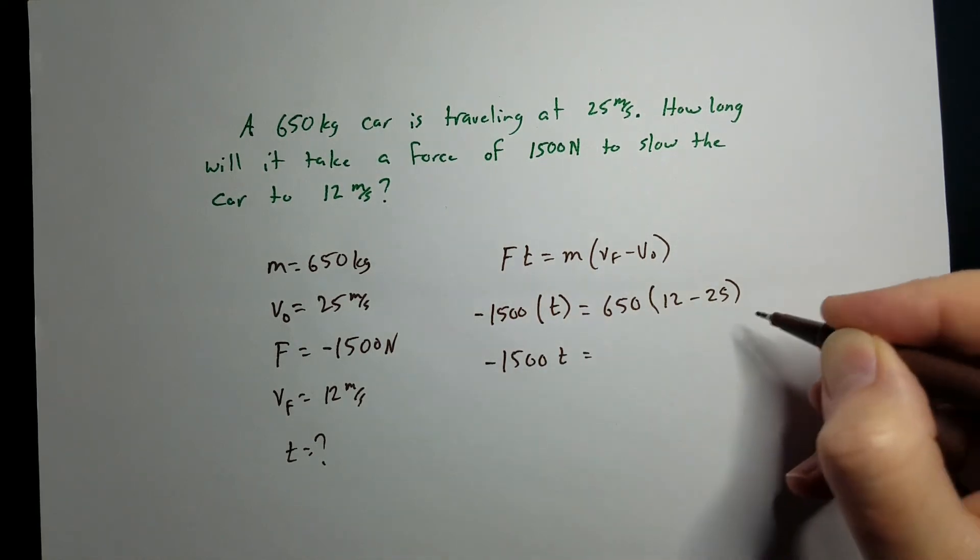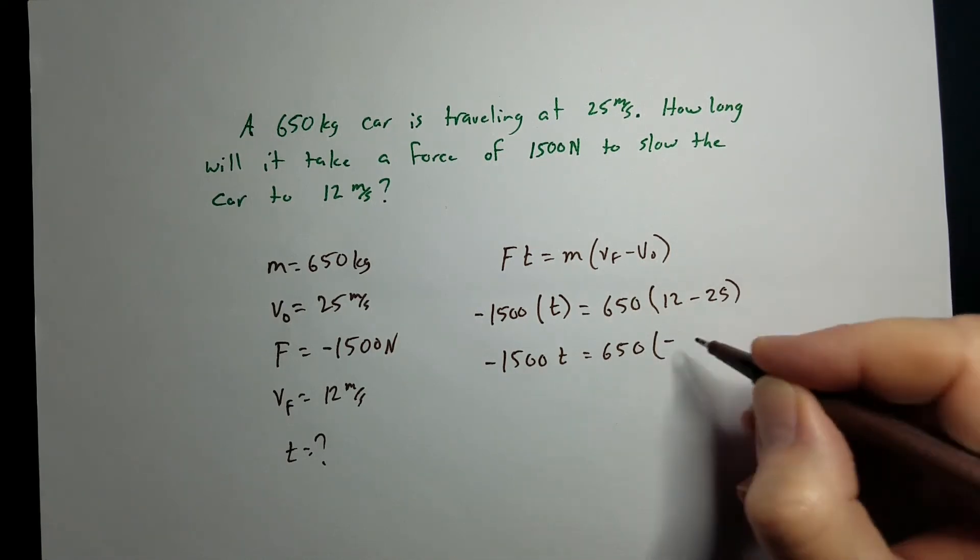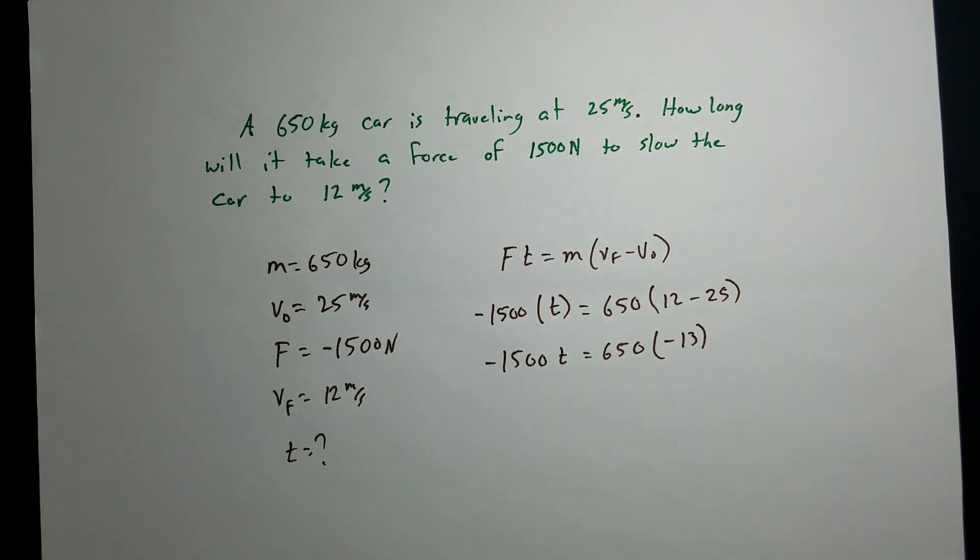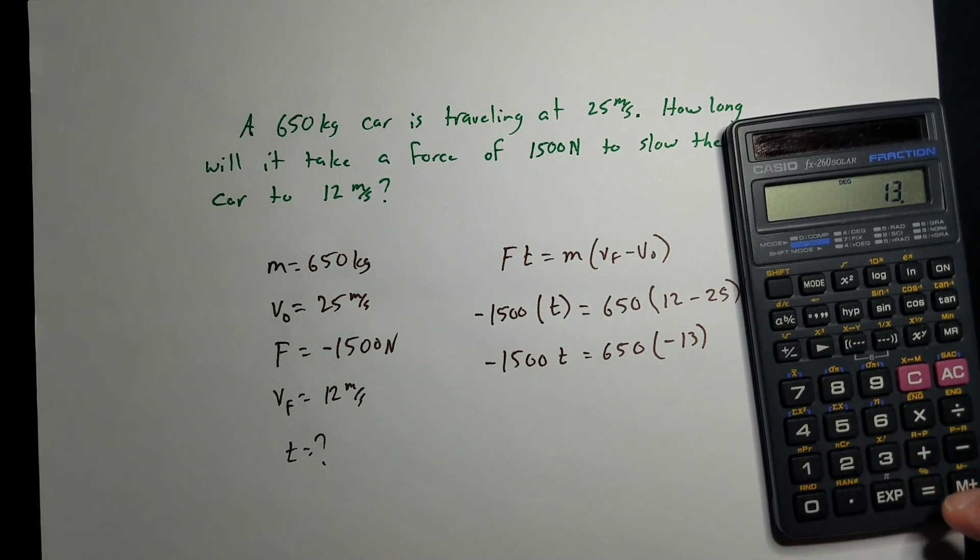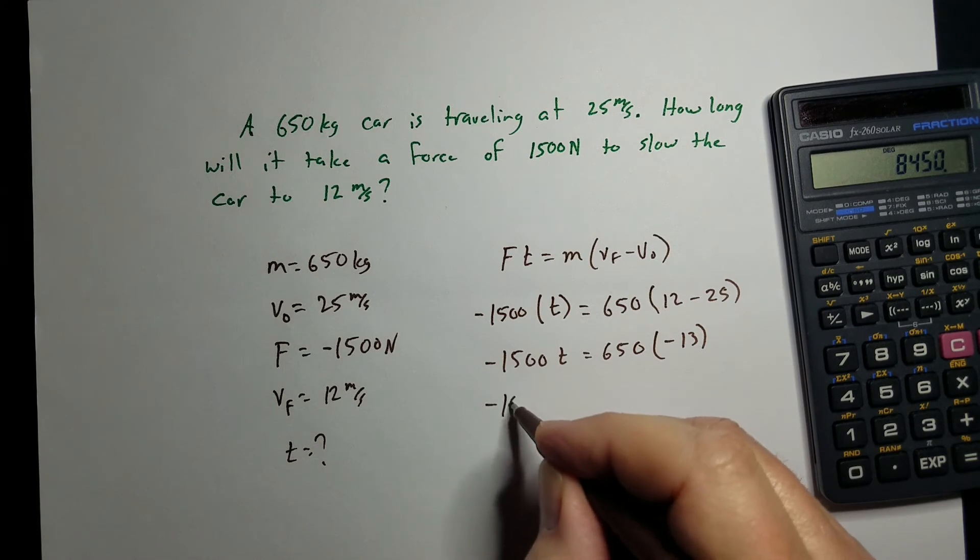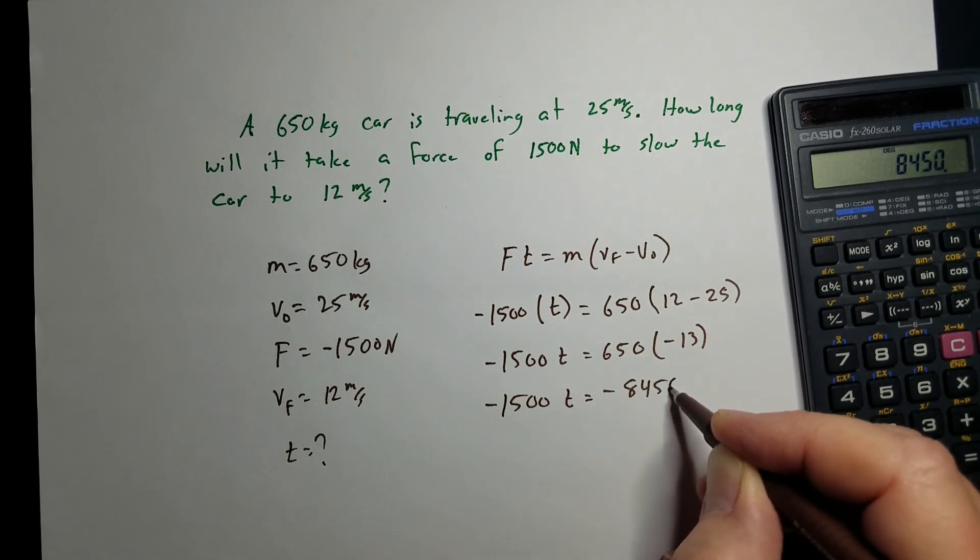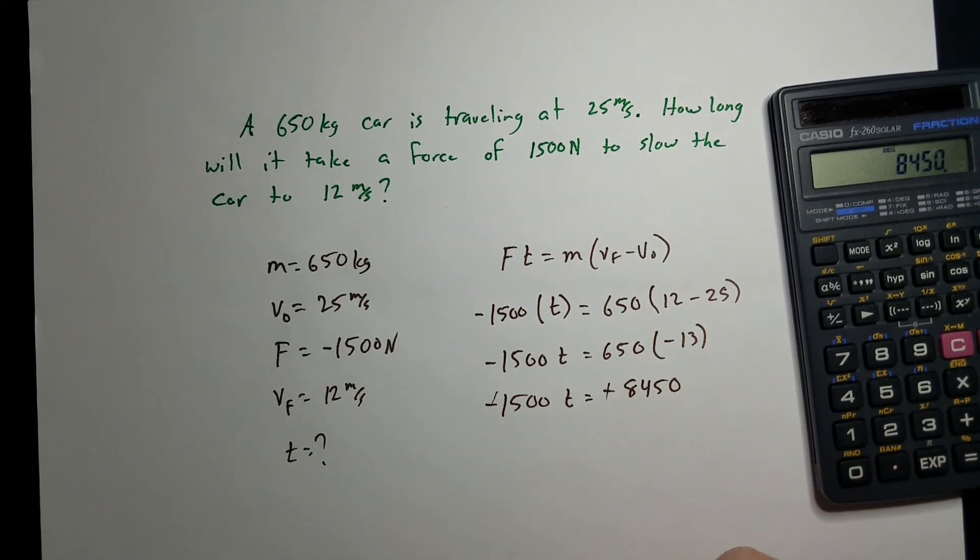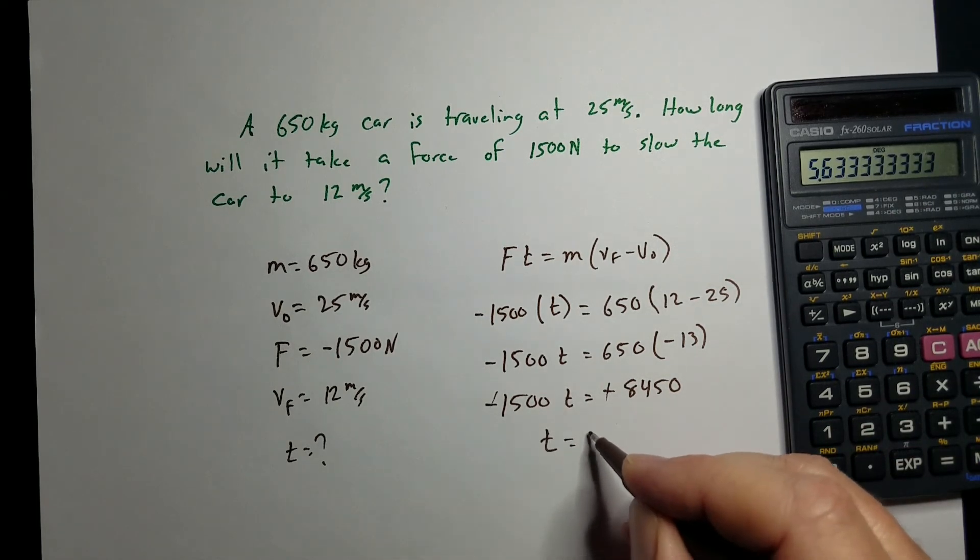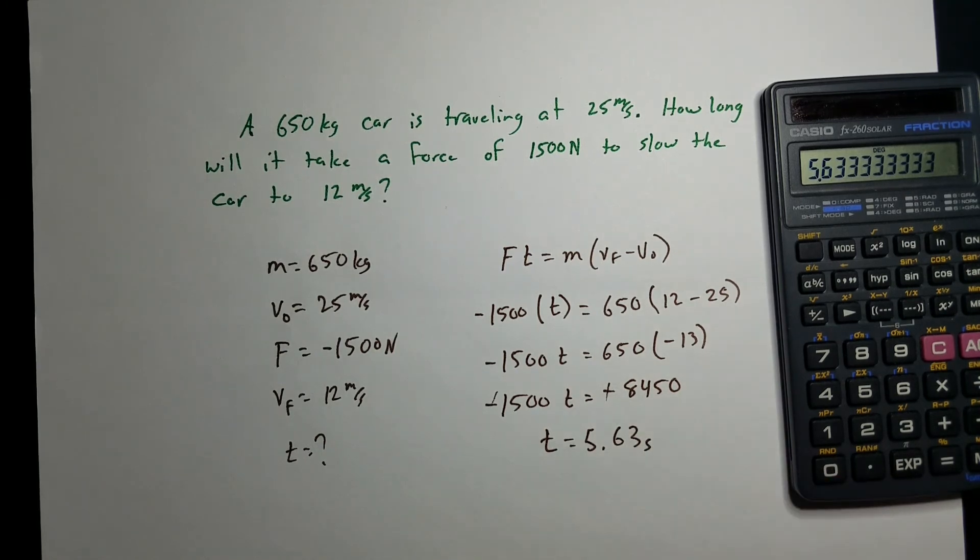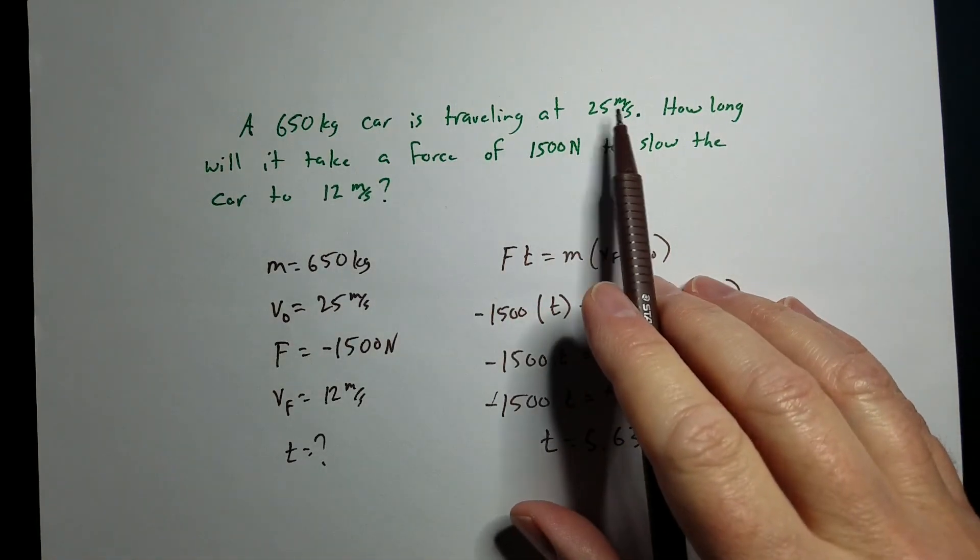And again, we start working the math. Do the parenthesis first. So, it's going to give us a negative 13. Bring in the calculator. 650 times 13 gives me this. So, negative 1500t equals negative 8450. Negative signs cancel each other out. And we would divide by 1500. And we get a time of 5.63 seconds.